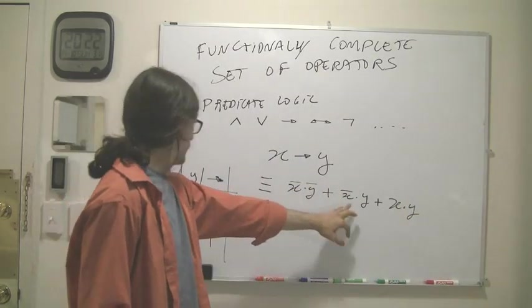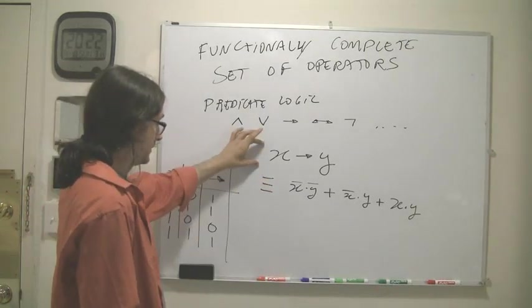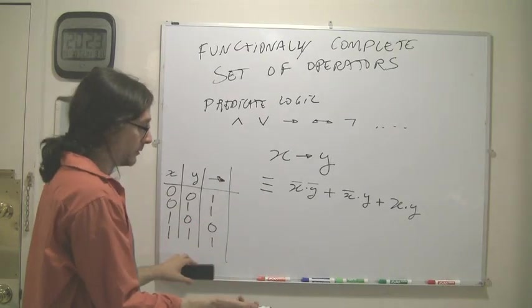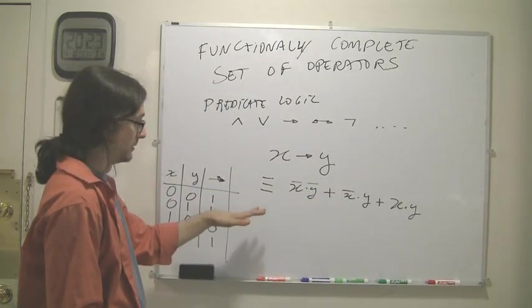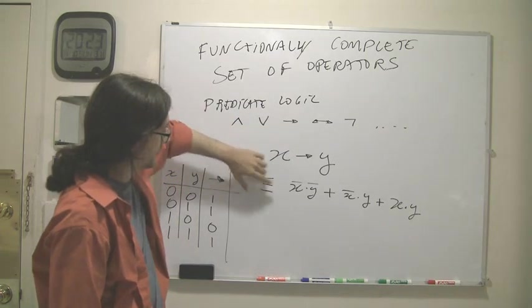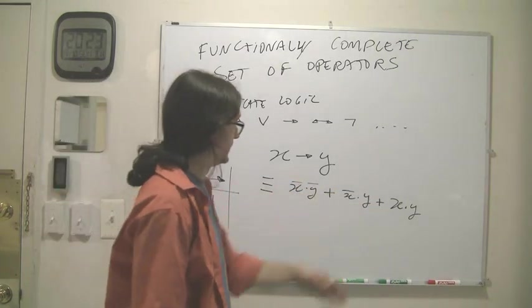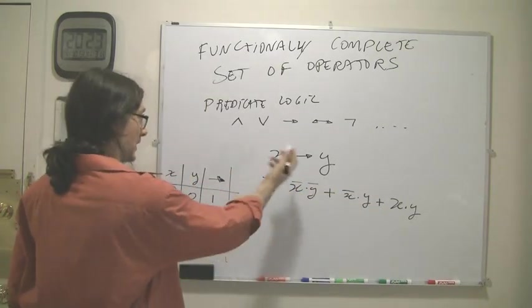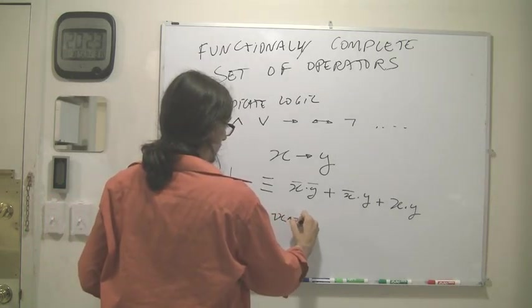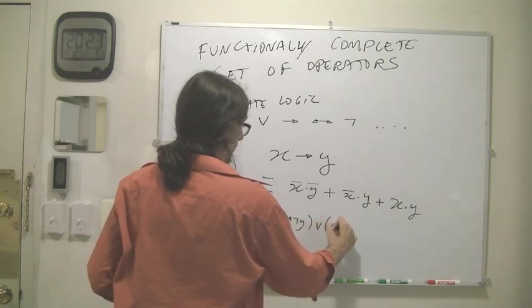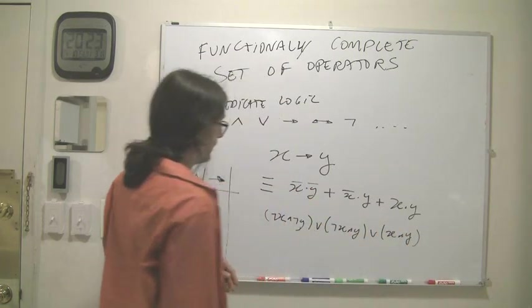So this is row 0, this is row 1, this is row 3, and of course row 2 is not included. So this, and this symbol here is a logical equivalence, right? It can be understood as has the same truth table as, in this context. So this expression has exactly the same truth table as this expression, and this one, which I wrote in Boolean algebra, but we might as well have written in predicate logic as not x and not y, or not x and y, or x and y.